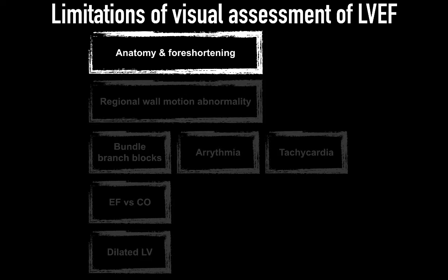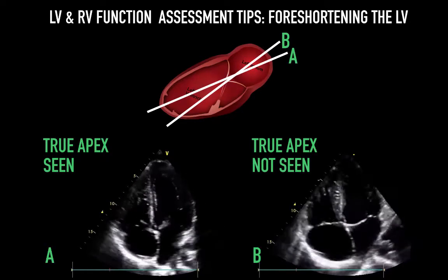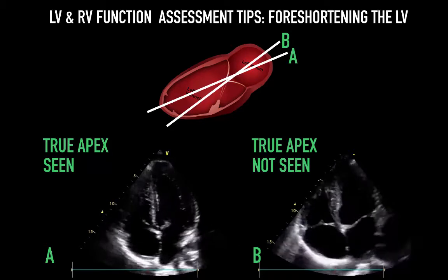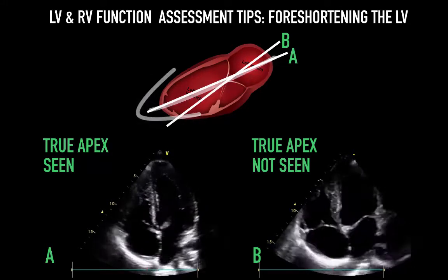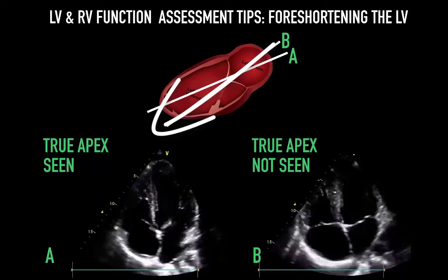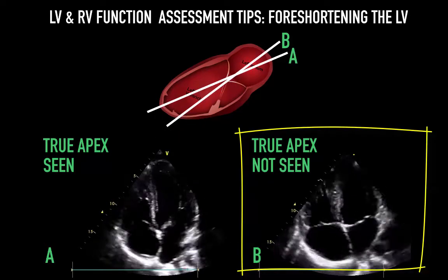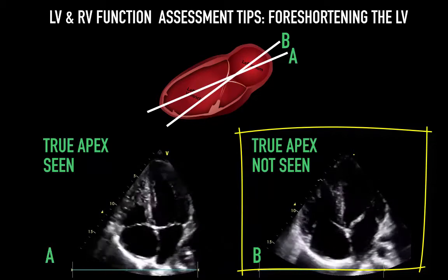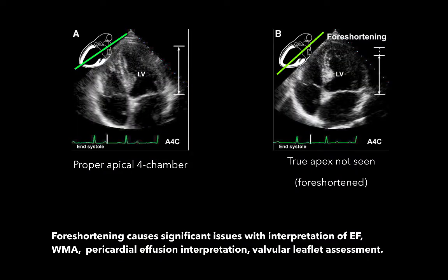Foreshortening is the incorrect measurement of the left ventricular long axis due to improper sector scan alignment — basically, we're not cutting in the right place. Instead of cutting across the true long axis of the left ventricle, the sector scan cuts at an acute angle that yields a shorter axis than the true axis length. The bottom right image shows a foreshortened apex compared to the left side. Foreshortening causes significant issues with EF interpretation, wall motion abnormalities, pericardial effusion interpretation, and valvular leaflet assessment. A foreshortened LV usually appears to have a better EF than it actually has.